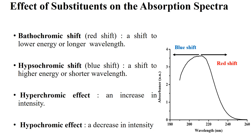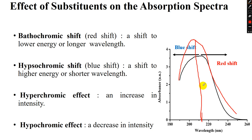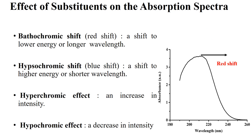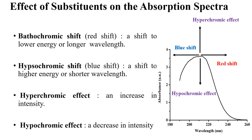Two more important terminologies are the hyperchromic effect and hypochromic effect. Hyper means higher, so when there is an increase in intensity of the absorption peak, that is called the hyperchromic effect. When the intensity decreases, that is called the hypochromic effect.